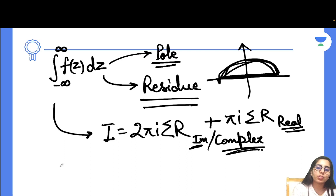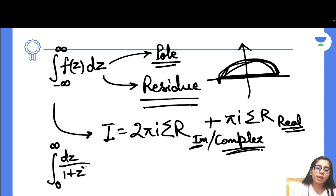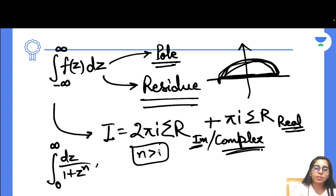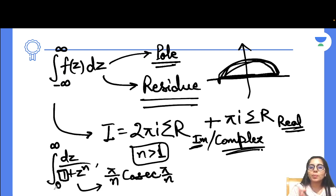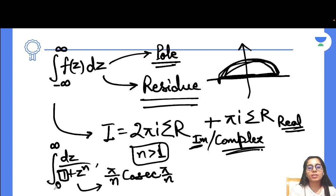Here is a useful trick. For the integration from 0 to infinity of dz over (1 + z^n), where n is greater than 1, the answer is directly π/(n · csc(π/n)). You can apply this formula without going through the full procedure. Even if the expression isn't exactly in this form, try to factor and rearrange it to match this form, then apply the trick to save time in the exam.